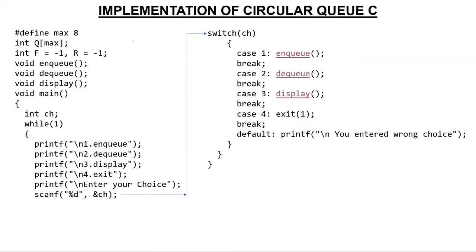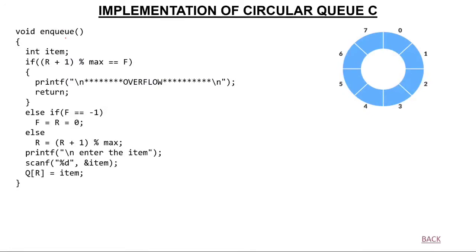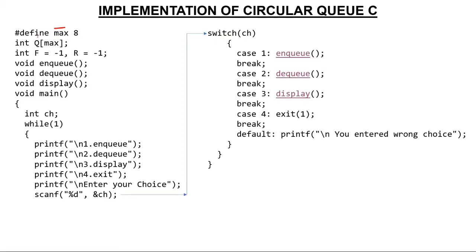Let's start. We have created a macro of size 8, so the circular queue is of size 8. I've declared a macro with max size 8, then created a queue array Q of size max — Q will go from index 0 to 7. At the start, front value is -1 and rear value is -1. F represents front and R represents rear pointer. I have used three functions: enqueue, dequeue, and display — these are the prototypes. In main, I used a variable ch and a while(1) loop — meaning the condition is always true.